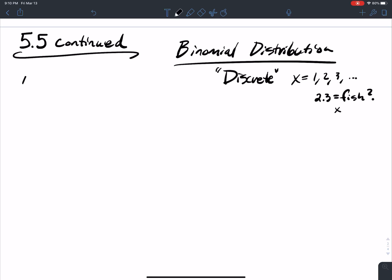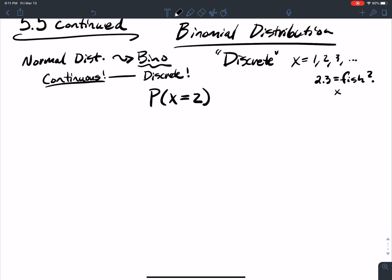With the normal distribution used to represent the binomial, I'm taking something that's continuous and I'm using that to represent something that's discrete. These are two completely different things. So if I was going to calculate the probability that maybe x equals 2, for a discrete, let me just draw a little picture.